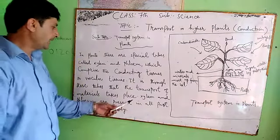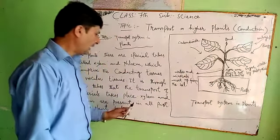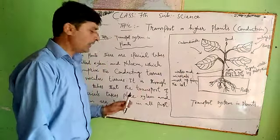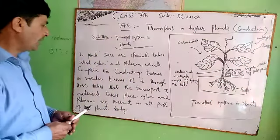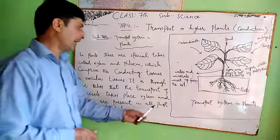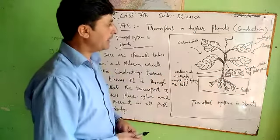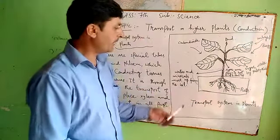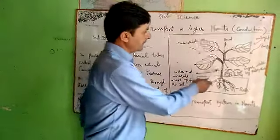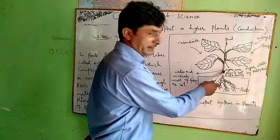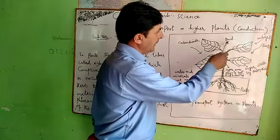These tubes are present in all parts of the plant body. These are the roots. This is the stem — it conducts water. And these are the leaves. And this is the part.